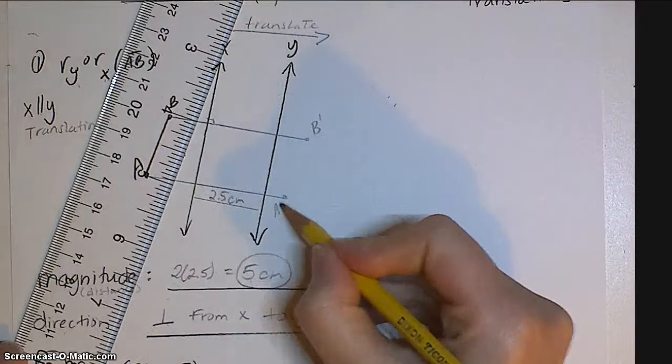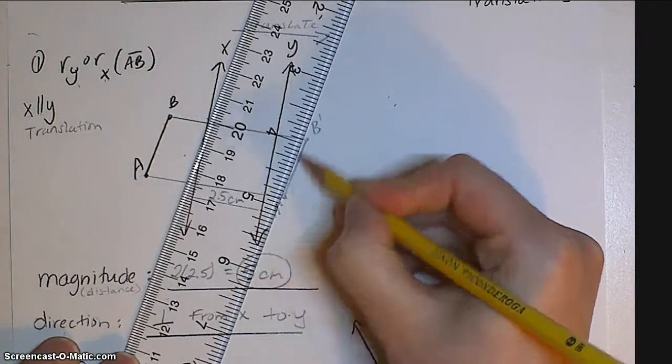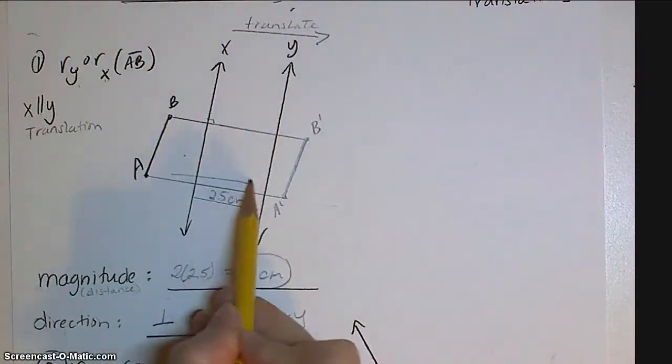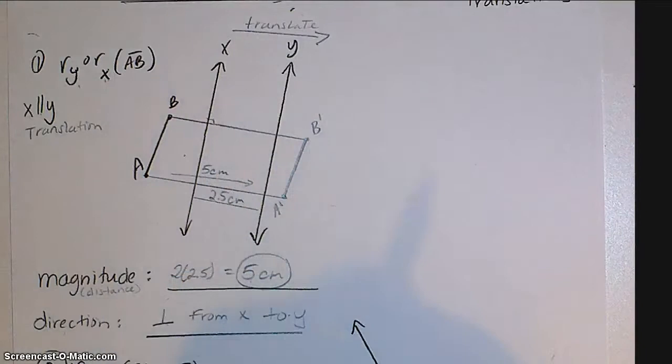And so then I have a prime, I have b prime. I'm just going to connect these to get my line segment that was translated in this direction perpendicular from x to y with a magnitude of 5 centimeters.